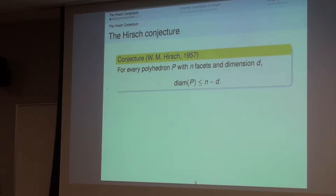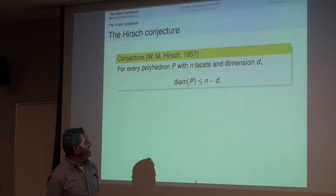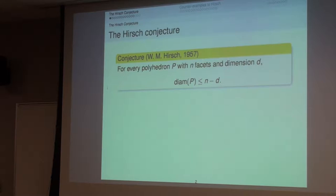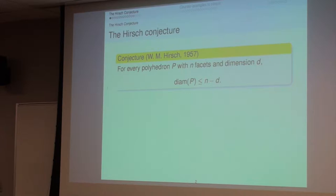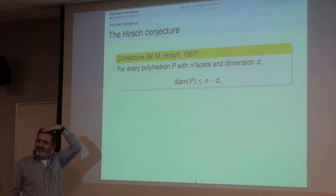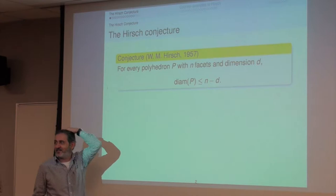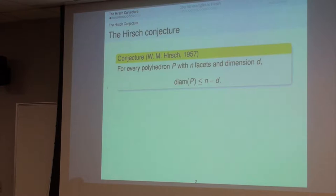The Hirsch conjecture states that if you have a polyhedron with n facets and dimension d, its diameter cannot be higher than n minus d. Let me ask how many of you know what these three words — polyhedron, facets, and dimension — mean. I'm going to explain it, but I just wanted to gauge the audience.